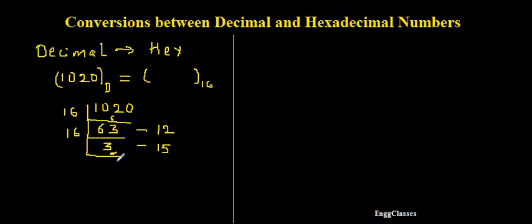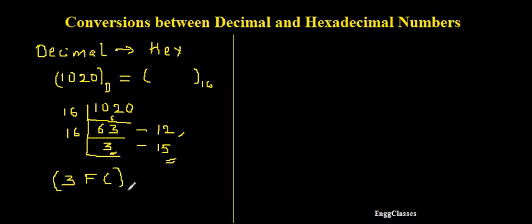Next I write the hexadecimal equivalent of all the individual remainders. 3 in decimal is 3 in hexadecimal. 15 in decimal is F in hexadecimal. 12 in decimal is C in hexadecimal. So the final hexadecimal number is 3FC. Therefore 3FC is the hexadecimal equivalent of the decimal number 1020. This is the process of converting a decimal number to its hexadecimal equivalent.